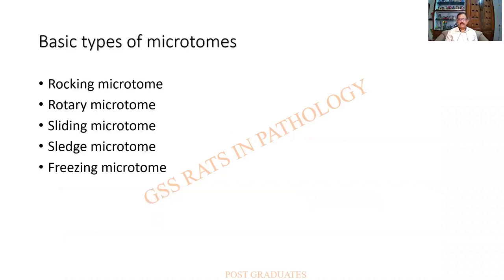What are the basic or fundamental types of microtomes? There are basically five types: the rocking microtome, the rotary microtome, the sliding microtome, the sledge microtome, and the freezing microtome.